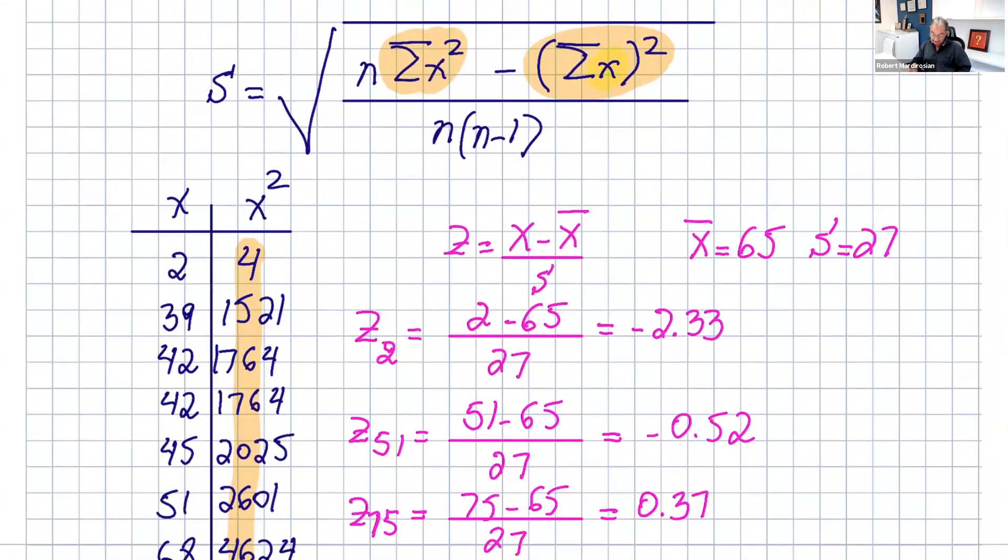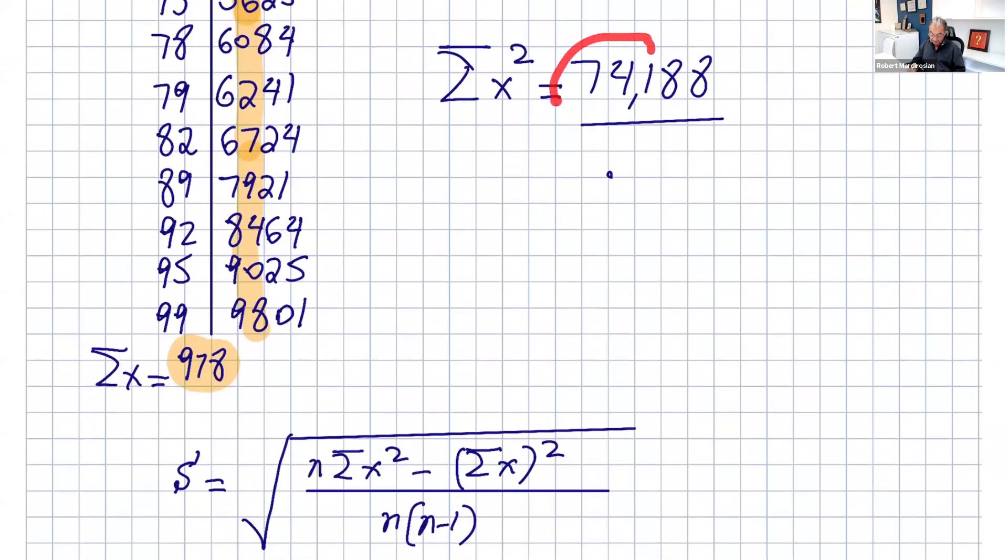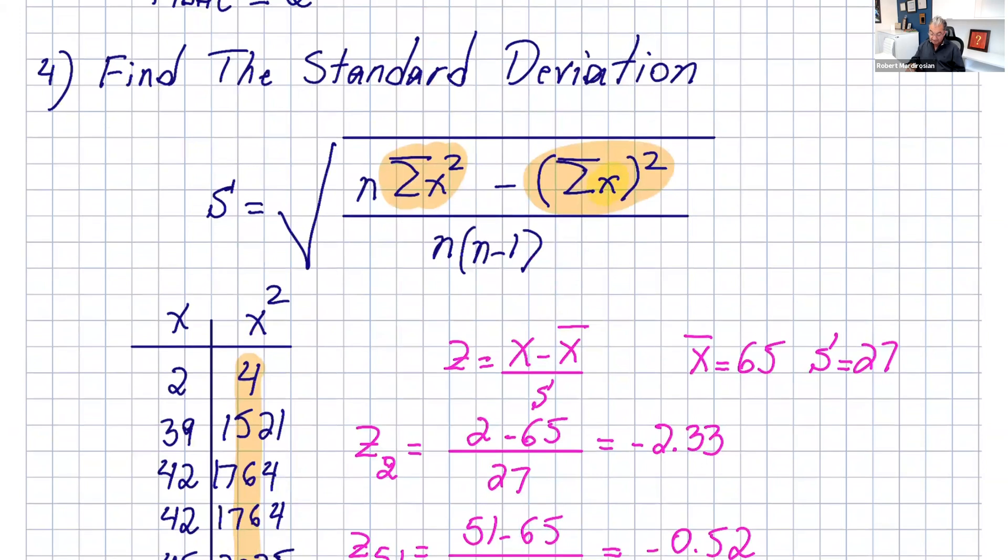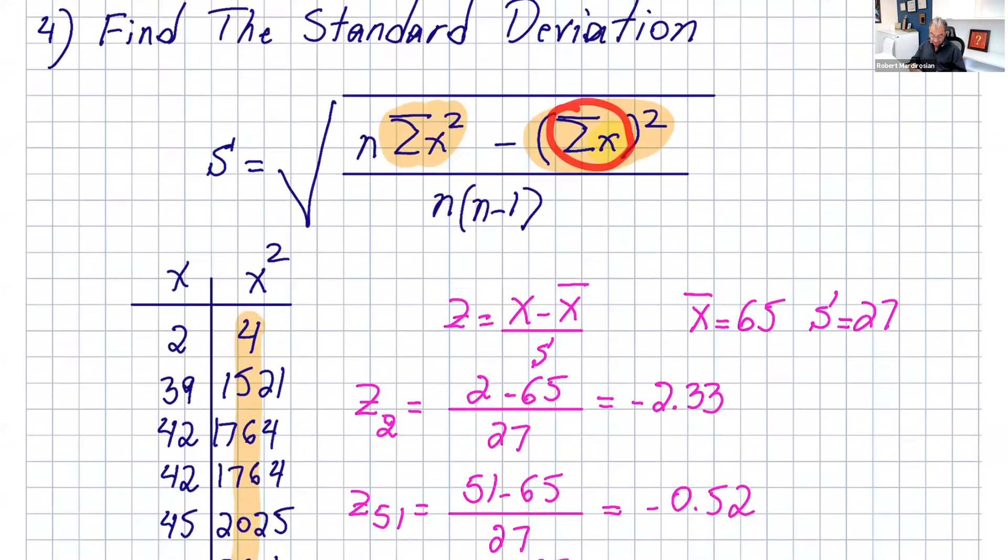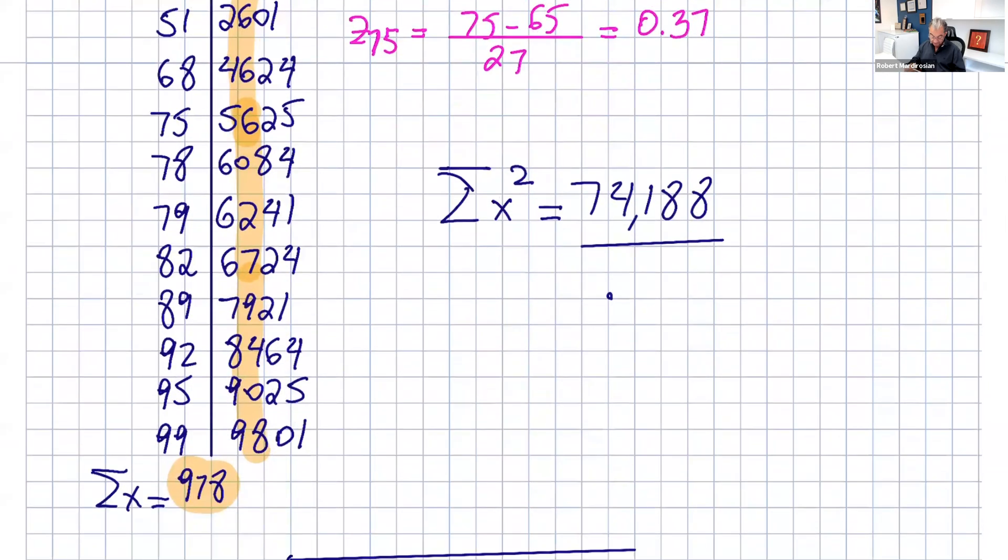What we need is x squared. You take each number in the data and square it. So 2 squared is 4, 39 squared is 1521 and so on. Then you need the sum, you add all these numbers. I got 74,188. The sum of x's we calculated for the mean is 978.